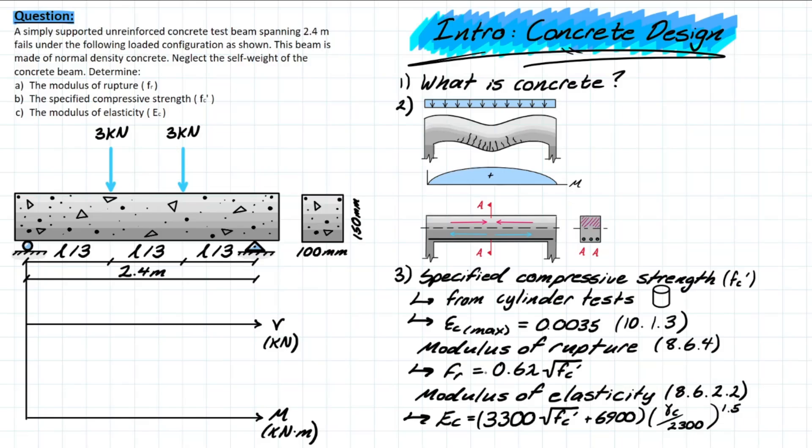For design purposes, if you wanted to determine it, you would determine the modulus of rupture or the tensile stress that it would fail at to be this formula here: 0.6 times lambda times the root of the compressive strength. This lambda simply represents the density of your concrete and it is a coefficient. If you had a normal density concrete, your lambda would be 1. If you had a low density concrete, it would be reduced to 0.75, which makes sense because as you reduce the density of your concrete, you're going to have a lower tensile strength for the material.